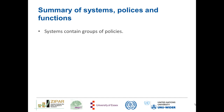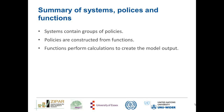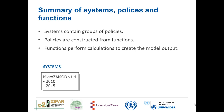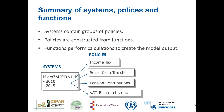To give a brief summary: systems contain groups of policies. Policies in turn are constructed from functions, and functions perform calculations to create the model output. In MicroZamod version 1.4, we have two systems — the 2010 system and the 2015 system — with work currently underway to incorporate the 2016 and 2017 systems. We have groups of policies covering income tax, the social cash transfer, two policies on pension contributions, and policies on VAT, excise, and other duties.